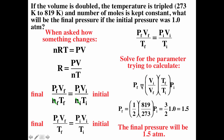When calculating what happens when conditions change, you start with PV = NRT, solve for R, and establish that the final conditions must equal the initial conditions through that relationship. Then you solve for whatever variable you're looking for.